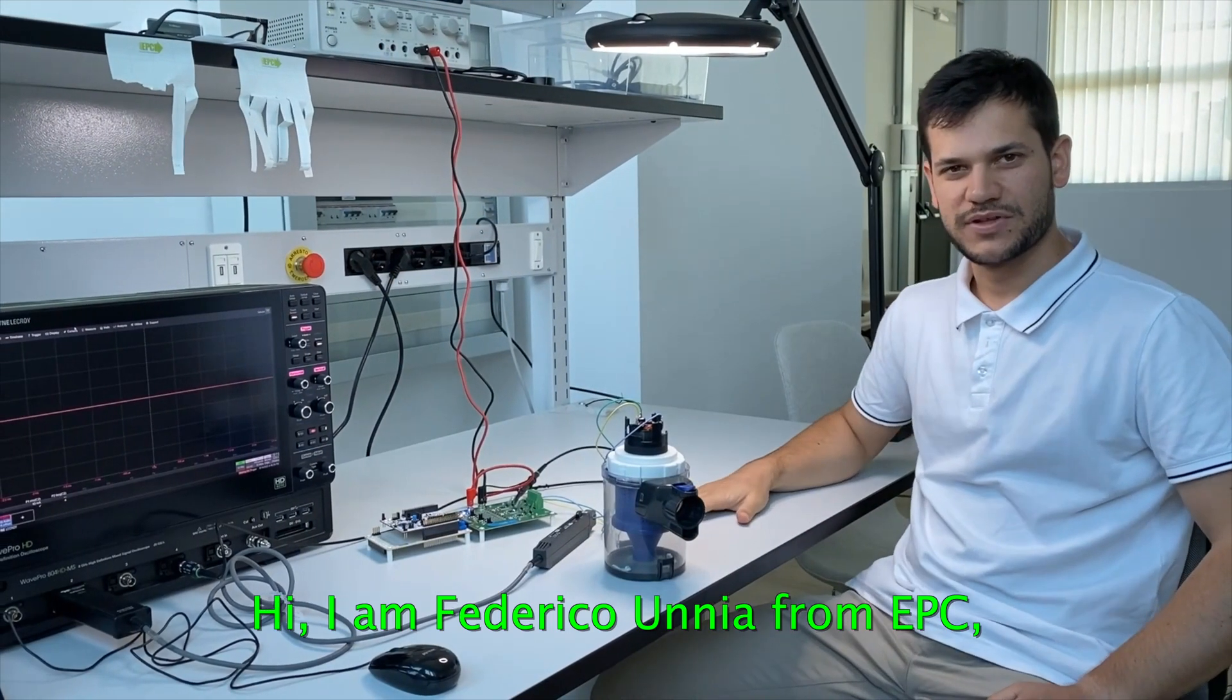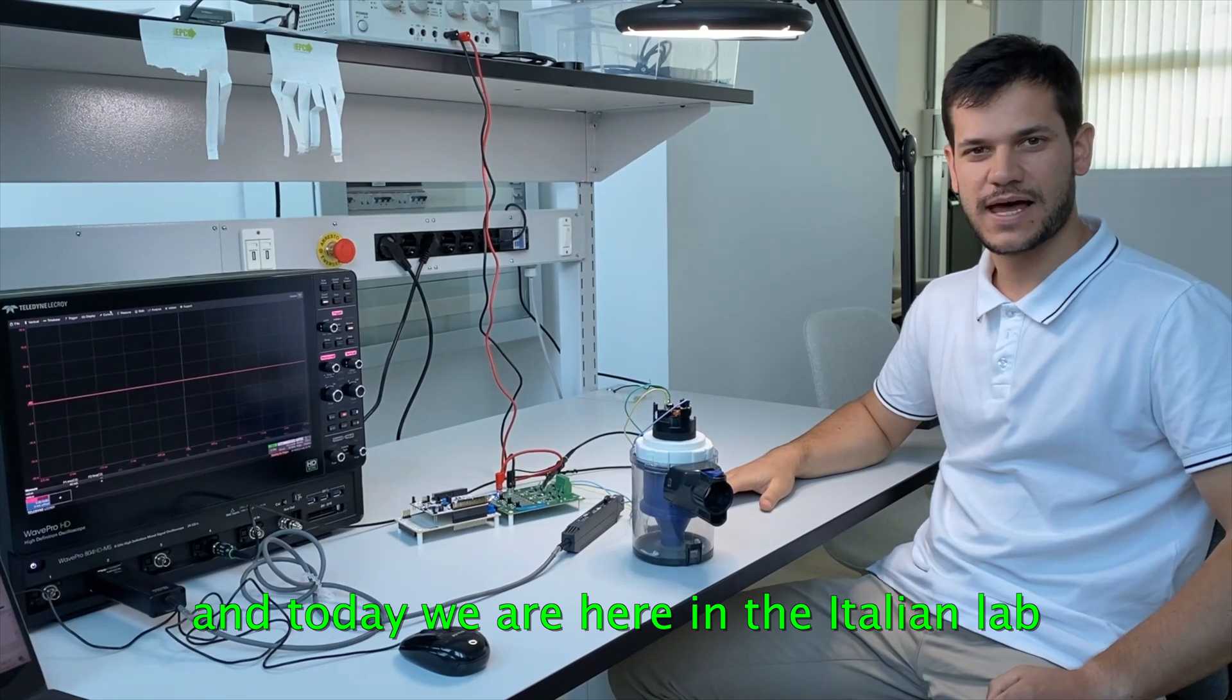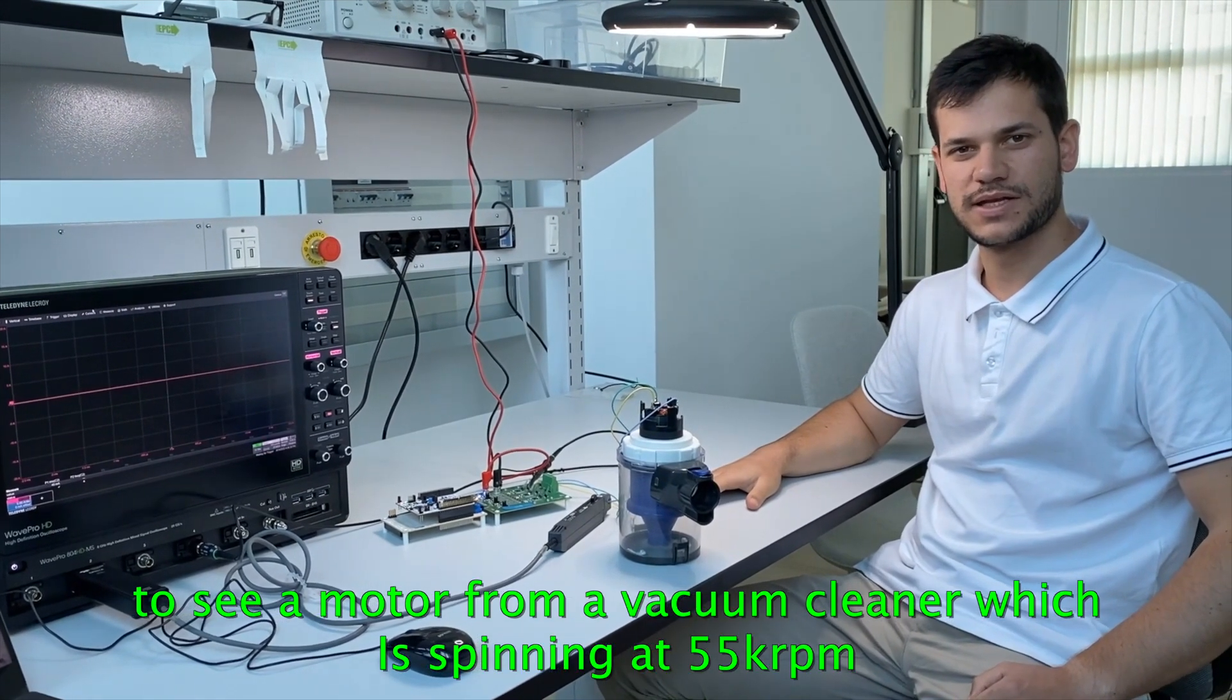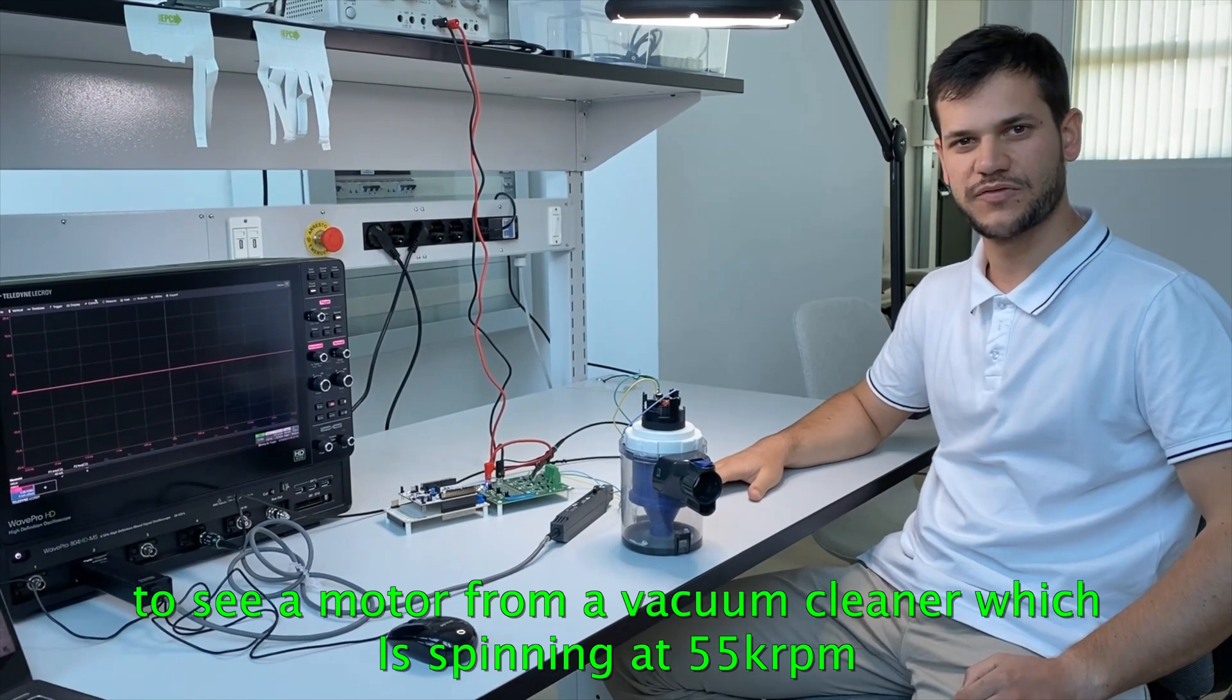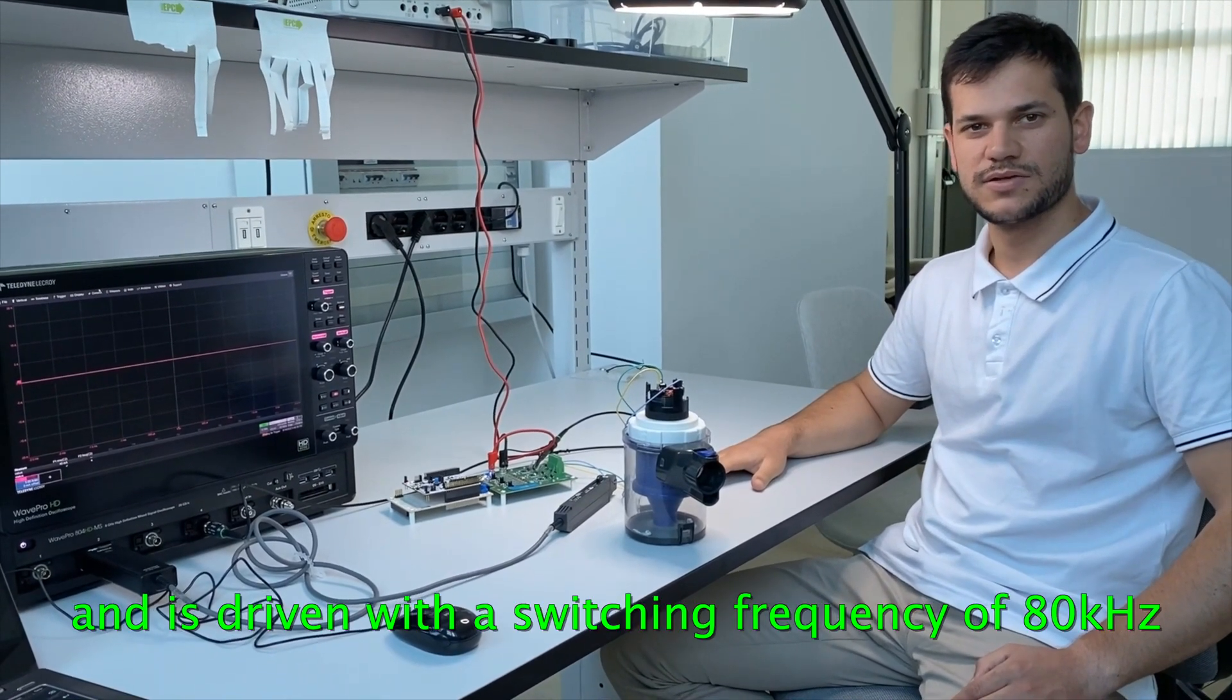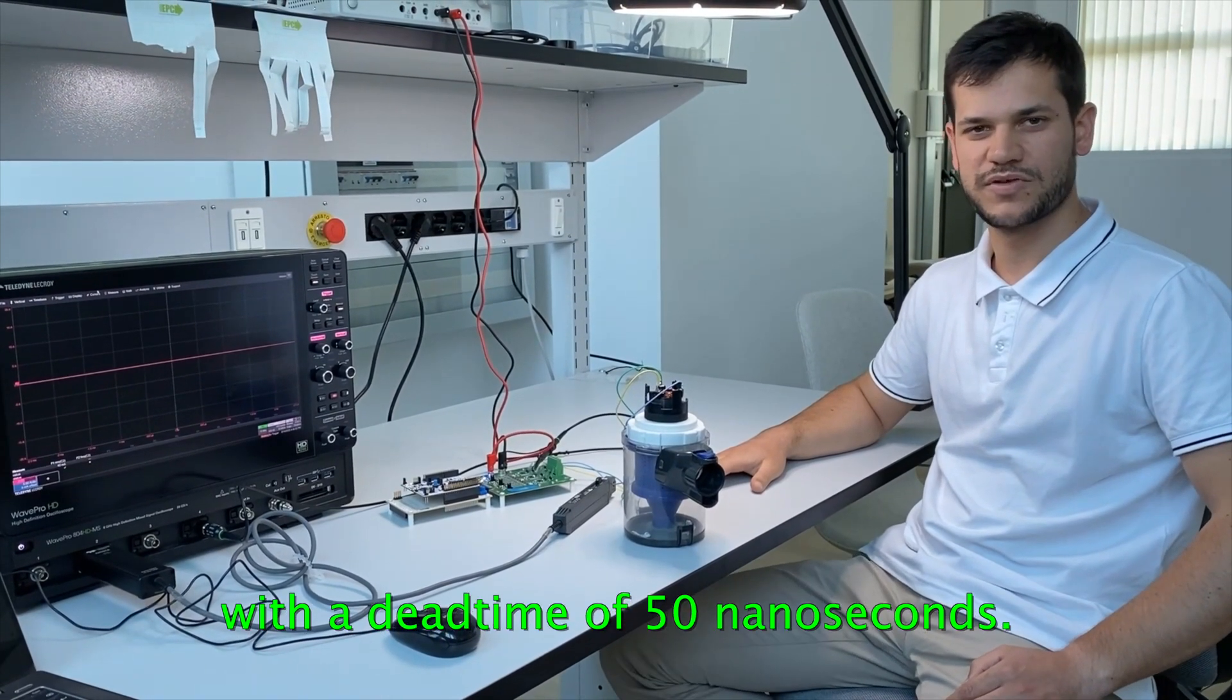Hi, I'm Federico Unia from EPC, and today we are here at the Italian lab to see a motor from a vacuum cleaner, which is spinning at 55 kHz RPM. And it's driven with a switching frequency of 80 kHz with a dead time of 50 ns.